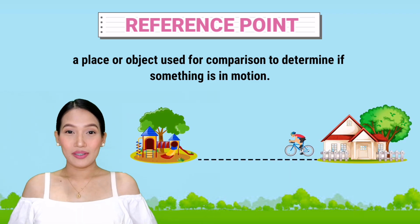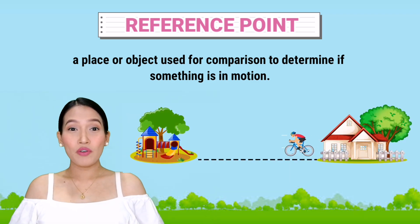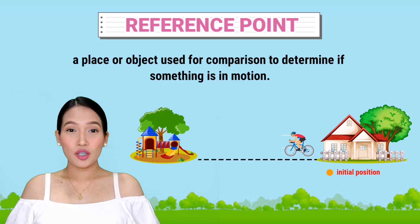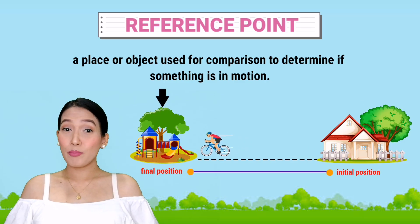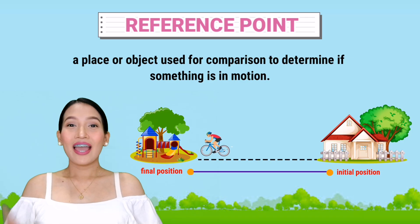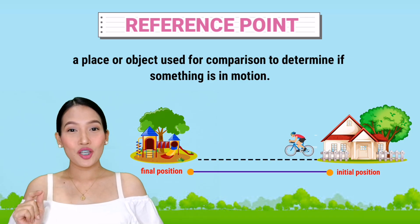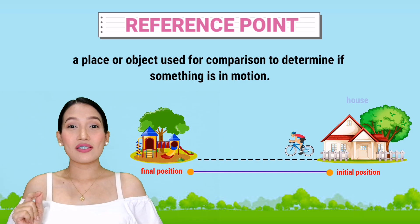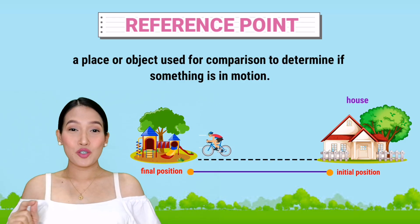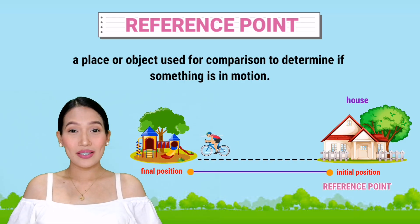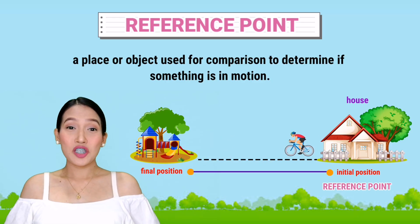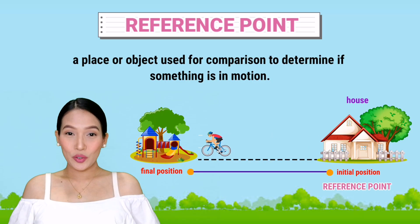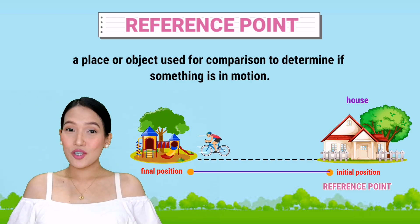In our example, the cyclist moves from its initial position, which is the house, to its final position, which is the park. Thus, in this example, the initial position of the cyclist, which is the house, is referred to as the reference point. Motion is exhibited because the cyclist changes its position or location from the house to the park.